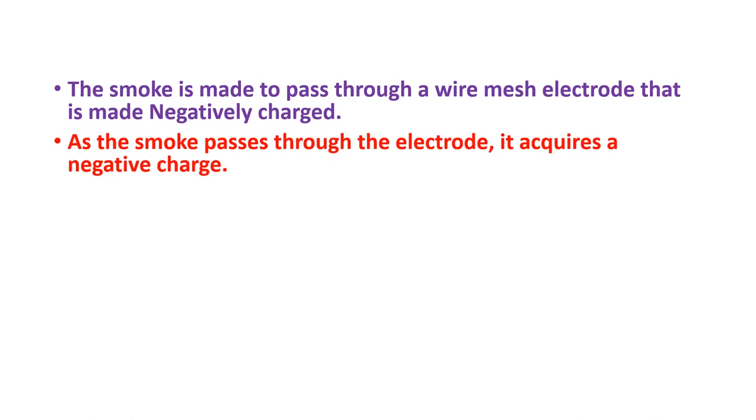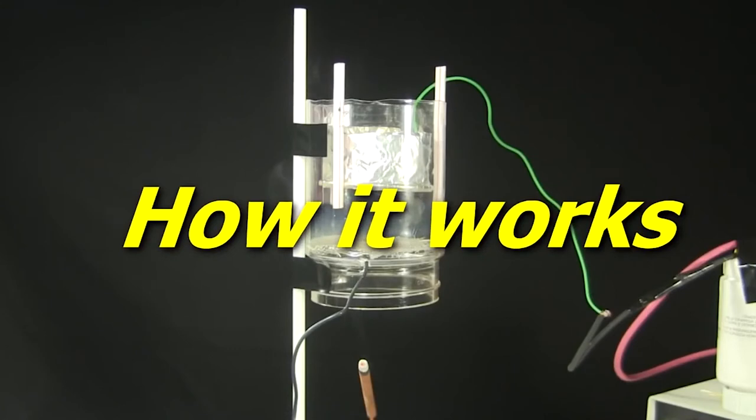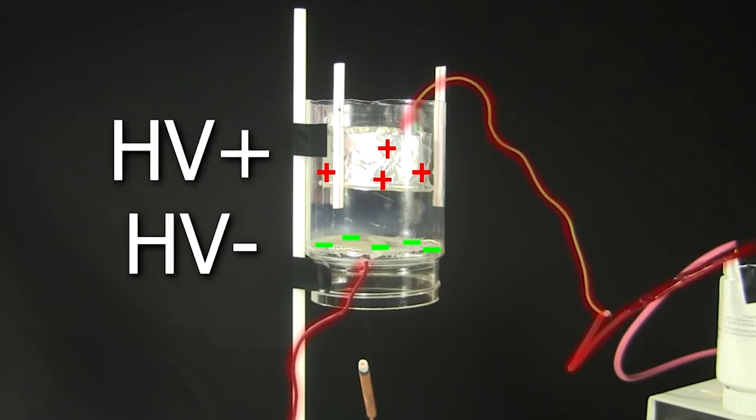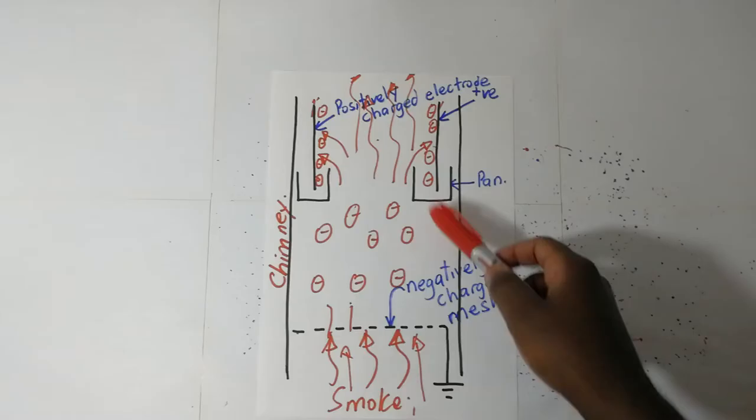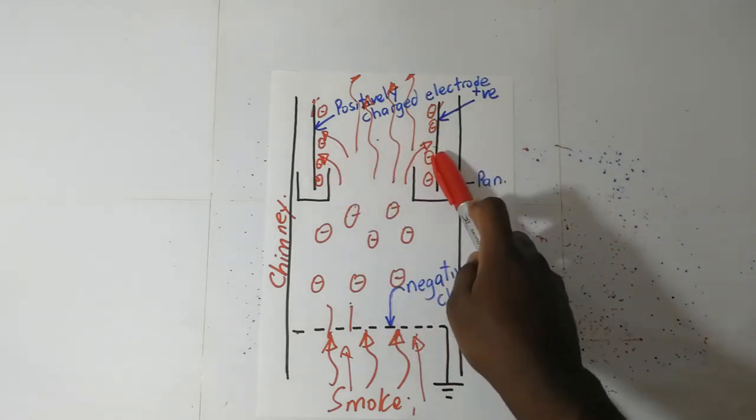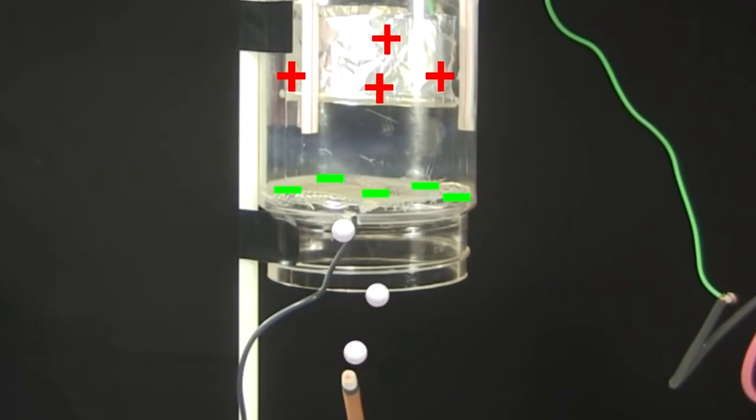As this smoke passes through this mesh, it is negatively charged. Another electrode up here—you can call it any letter, electrode B—this is electrode A, electrode B. Another electrode B is placed higher up the chimney and made positive.